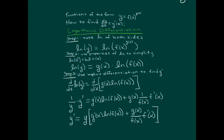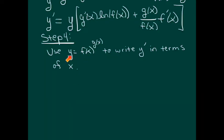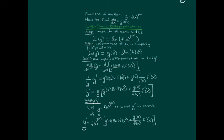Let's look at the overall process: we started with f(x) to the g(x) power, took the log of both sides, used properties of logs, then used implicit differentiation. By the time we get to the final answer, we have y in our solution along with expressions depending on x. The final step is to replace y with f(x) to the g(x) power. If someone gives you a function of x, your answer for the derivative should be a function of x. This final expression gives us slopes of tangent lines on the original function.